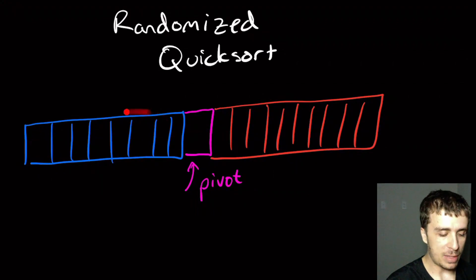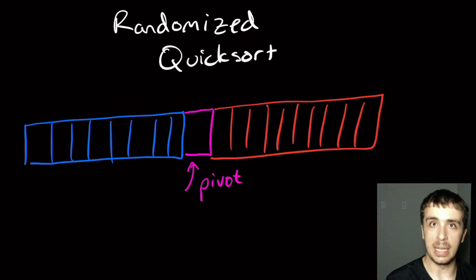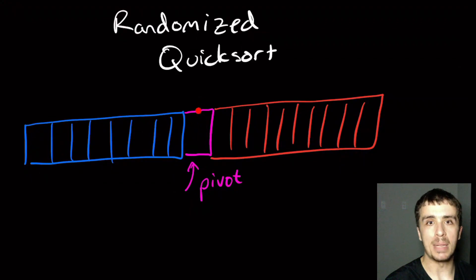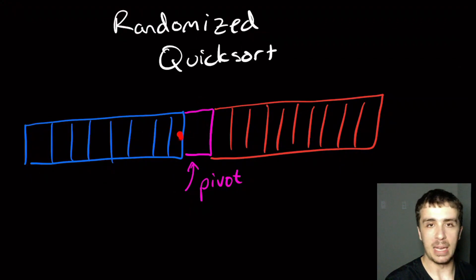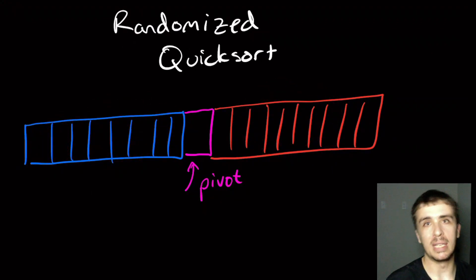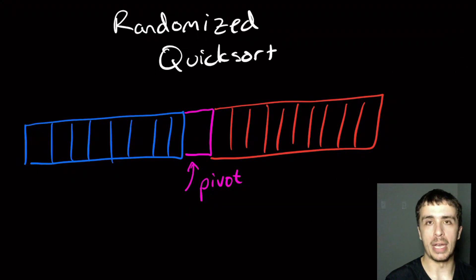Since everything to the left of the pivot is less than the pivot and everything to the right is at least the pivot, the pivot is in the right place and we don't need to move it anymore. So when we recursively sort the left part and then the right part in place, we have sorted the whole array.